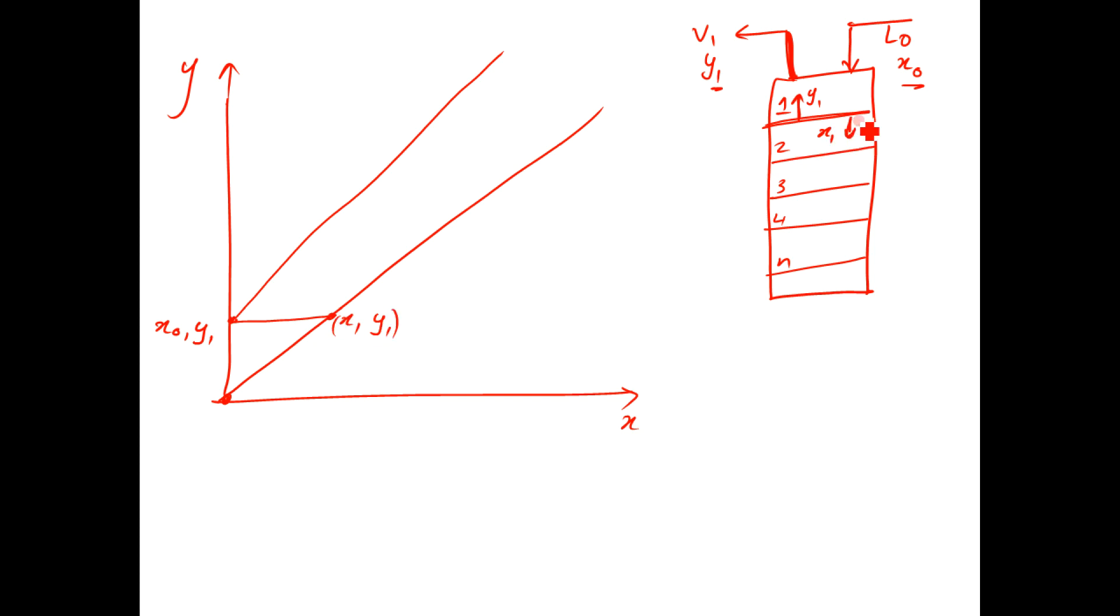Now this X1 between the two stages is going to correspond to vapor Y2 which is coming out of stage 2. So we draw vertically up and we get the point X1 Y2 on the operating line. Once again Y2 vapor is in equilibrium with X2 liquid coming out of stage 2. So we go horizontally across to the equilibrium line.